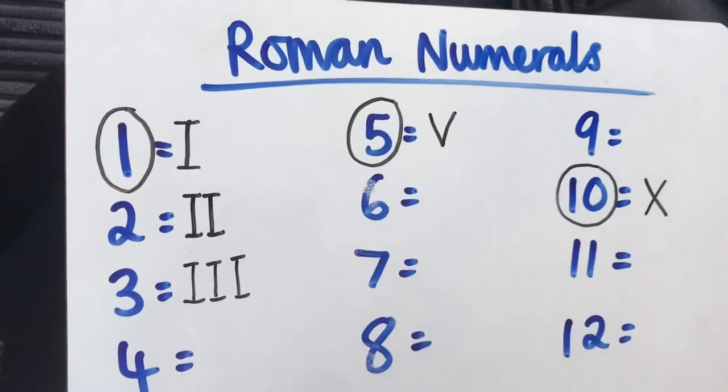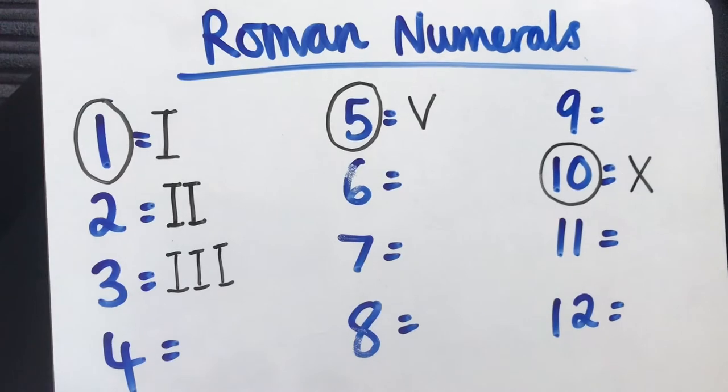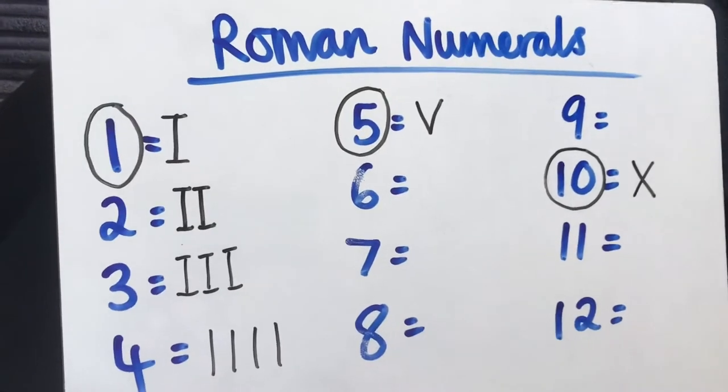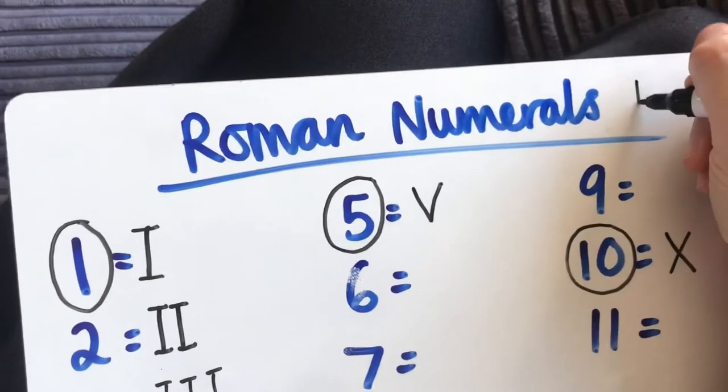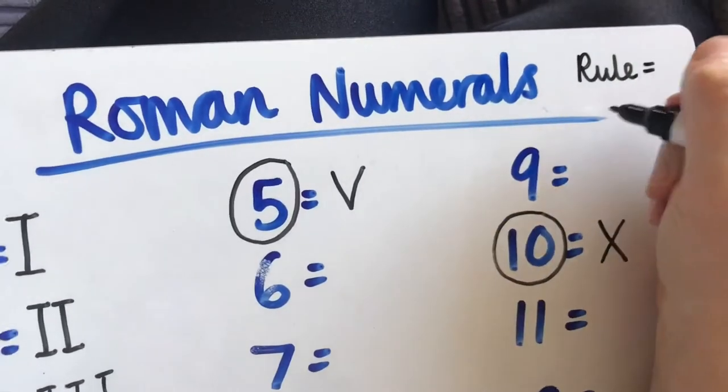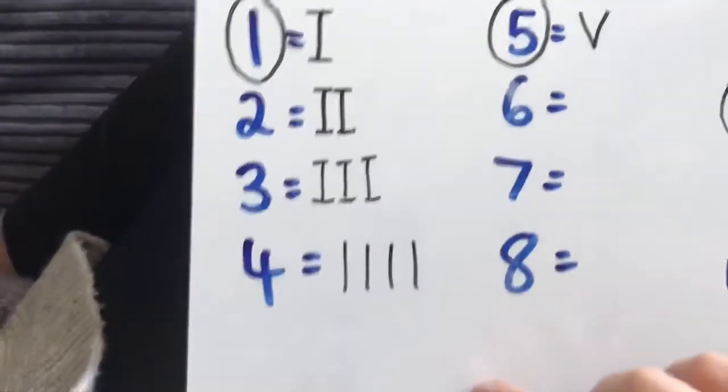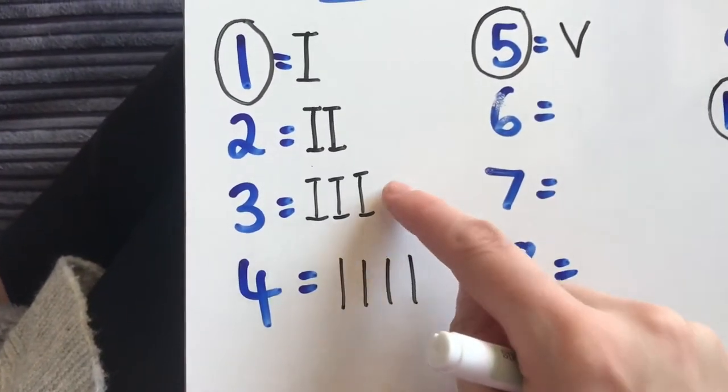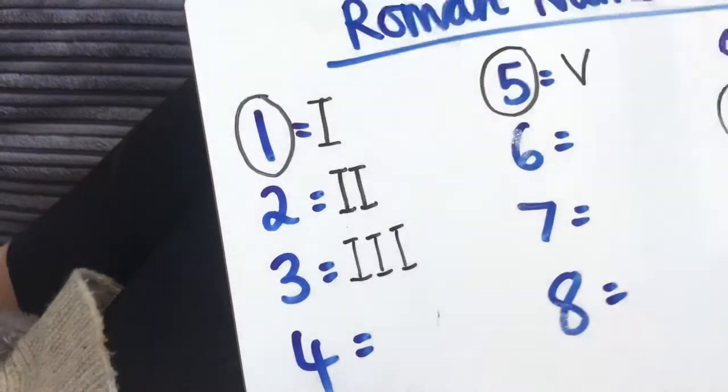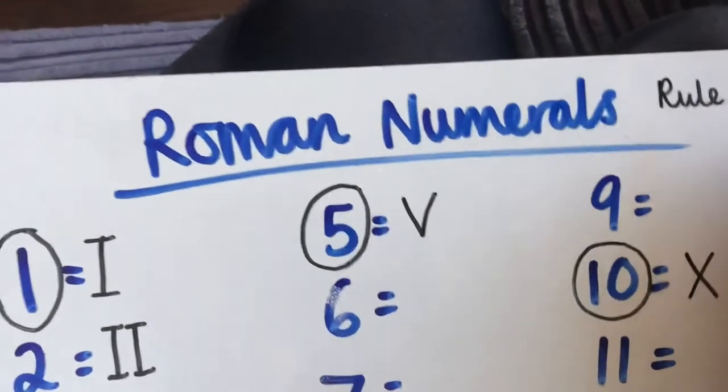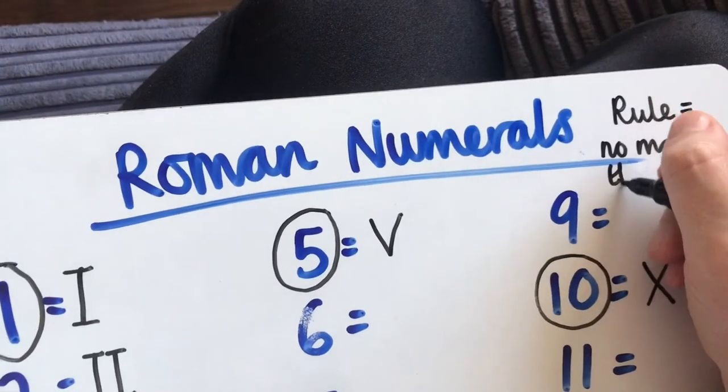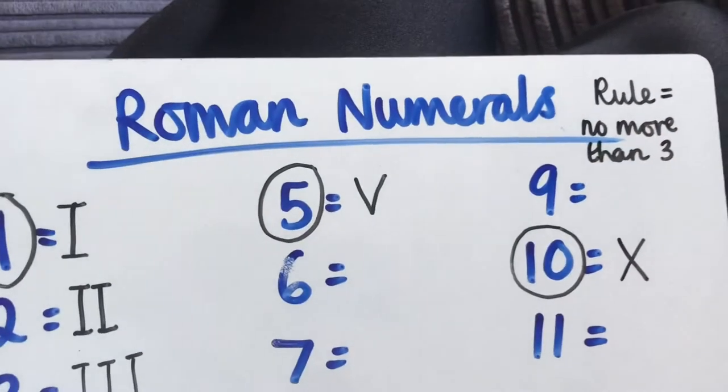But this is where it gets interesting, so we need to be really careful not to make a mistake here. The number 4 is not four I's and I'm going to tell you why. This is a really important rule. The rule is you can't have more than three in a row. You can't have more than the same one repeated three times. The rule is no more than three in a row.